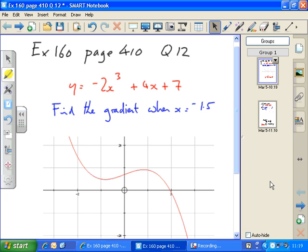So y equals minus 2x cubed plus 4x plus 7. Find the gradient when x equals minus 1.5. Here's the function plotted. It's a cubic because it's got an x cubed in it, and you can see the characteristic shape of that cubic curve.